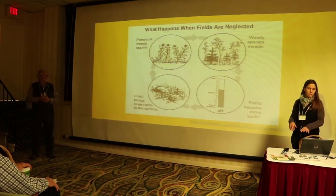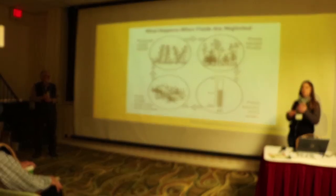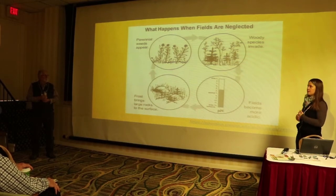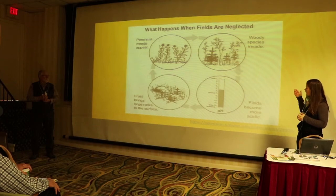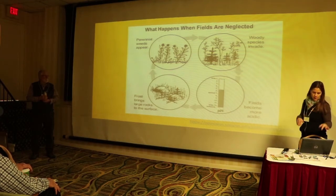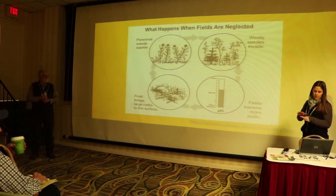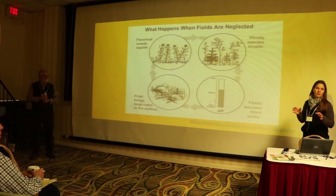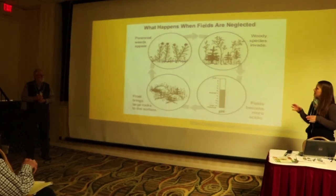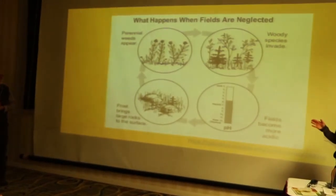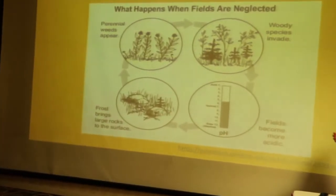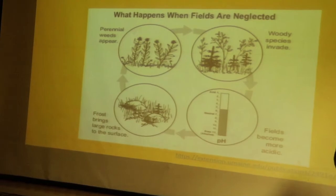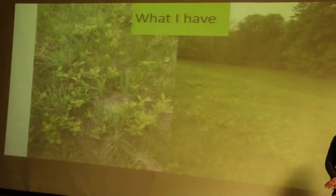Generally, what happens when you've acquired a hayfield that's been neglected for a while: you start to see some perennial weeds come in, woody species will come in, and your fields generally become more acidic over time. As forage species become more sparse in your field, you might see more frost-thaw cycles and the heaving of rocks, making it more uneven — depending on where you live and what kind of soil you have.